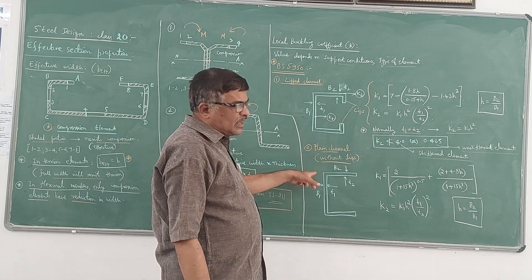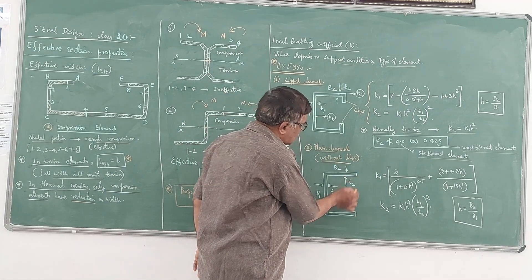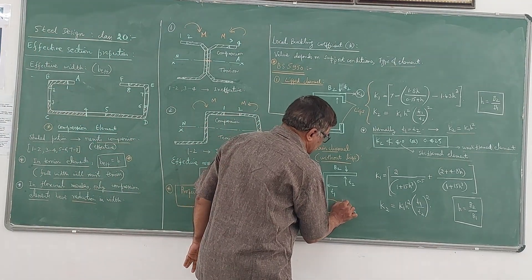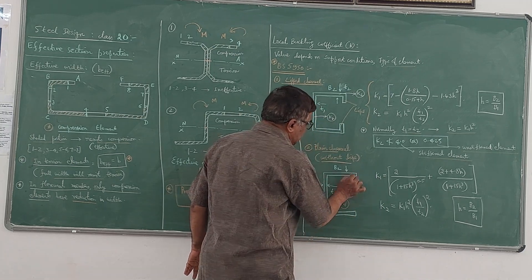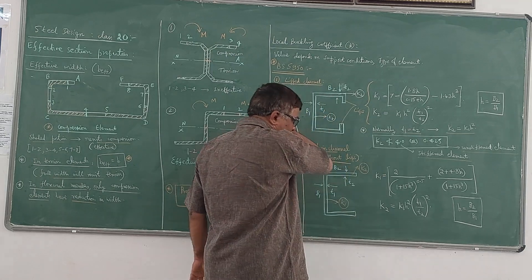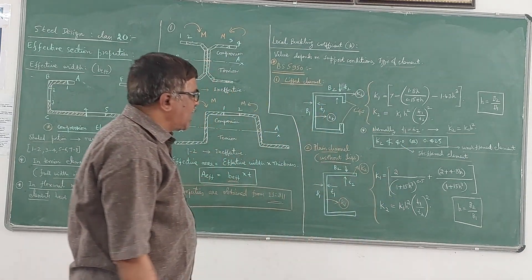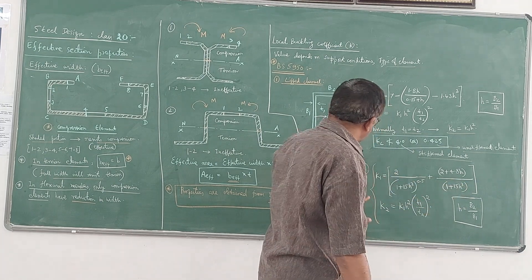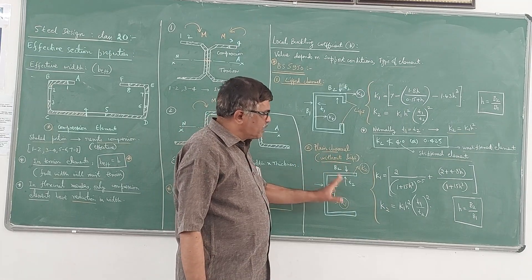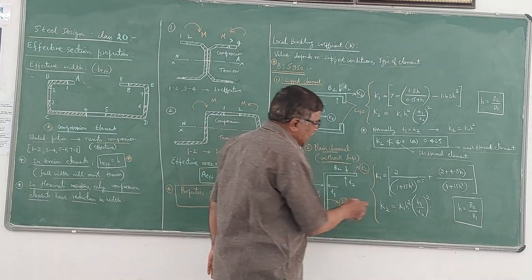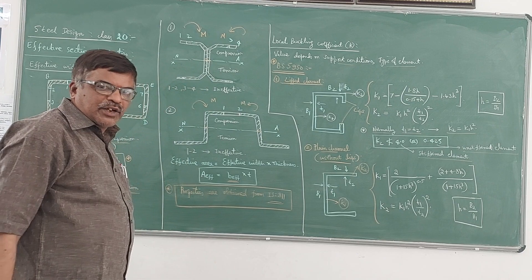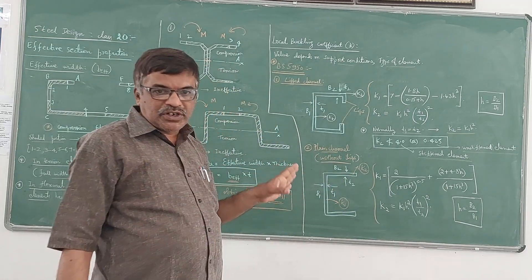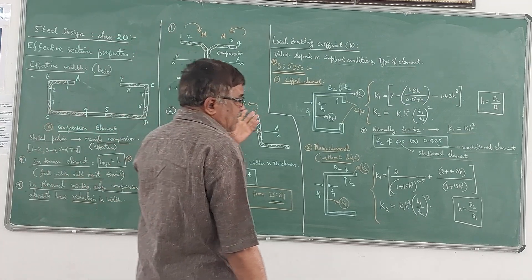For a plane channel without lips, B1 and B2 are the web and flange dimensions, and T1 and T2 are the thicknesses. Here K1 is given by: K1 = 2 / (1 + 15H³)^0.5 + (2 + 4.x × H) / (1 + 15H³), where H = B2/B1. K2 is given by K1 × H² × (T1/T2)⁴, and if T1 equals T2, K2 = K1 × H². This is how you compute buckling coefficients for flange and web portions with or without a lip.